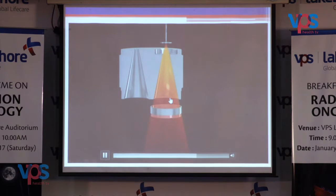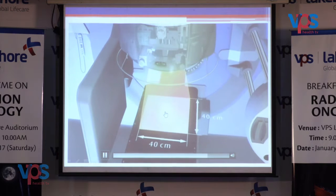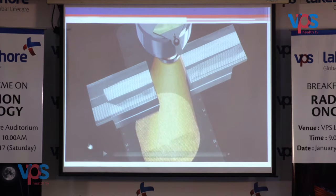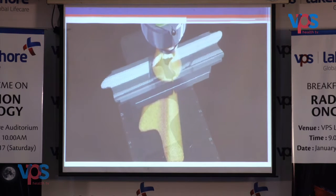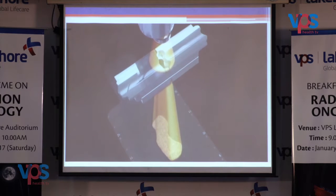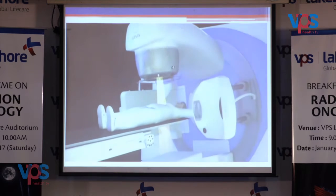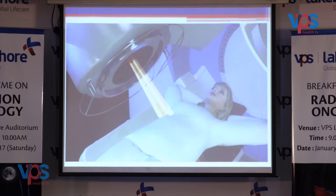The beam is initially conical in shape. When it exits the treatment head, the maximum field size is 40×40 cm. The multi-leaf collimator is the most important component in the treatment head — it not only shapes the beam according to the tumour but also shields the critical organs. These multi-leaf collimator leaves continuously move according to the tumour shape, and their configuration changes continuously with gantry movement depending upon the projection of the target.